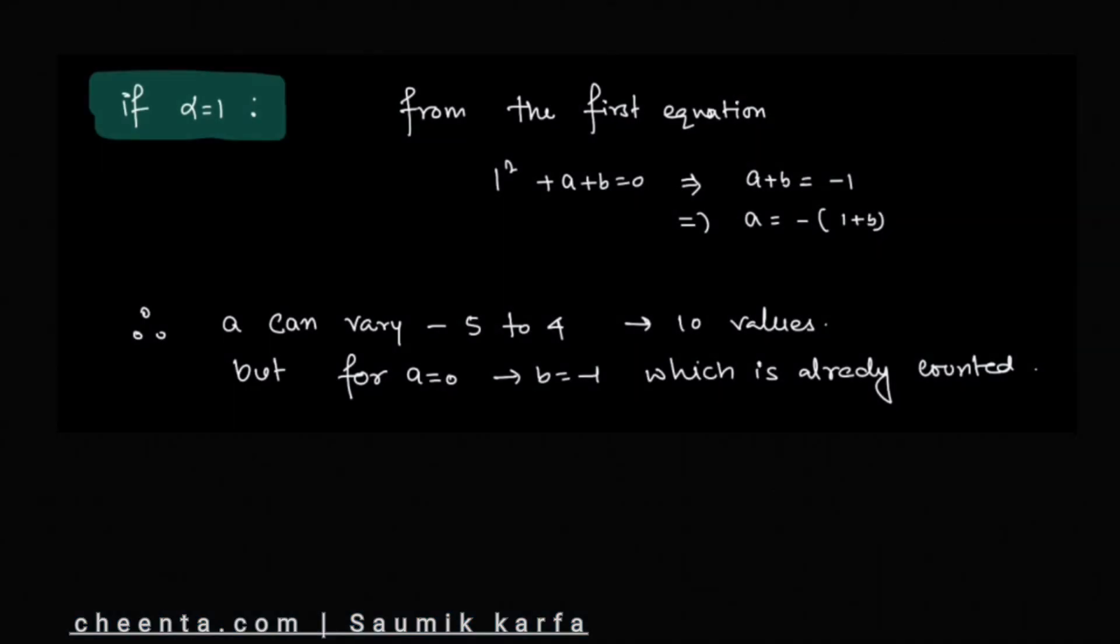Now if α = 1, from the first equation we get 1 + a + b = 0, so a + b = -1, meaning a = -1 - b. We can understand that a can vary from -1 to 4; a cannot be 5 because then b would not be in set x anymore. So a can vary from -5 to 4, giving us 10 values. But a = 0 is included here, and for a = 0, b = -1,